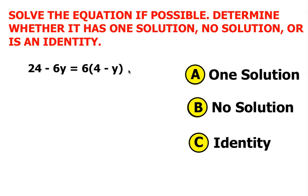When you apply distributive property, you're going to distribute the 6 and you're going to get on the right side 6 times 4 is 24 and 6 times negative y is minus 6y.